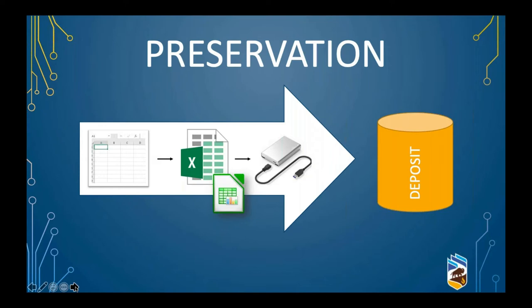If you do use less commonly used software but it's still functional over your research, you should still consider converting to something more commonly used at the end of your project, particularly if you intend to make that data accessible to others. Other potential users will need to download and open your data to interpret it, and they won't be able to do this if you're using software that's very expensive to install or inaccessible. Where possible, opt for open source or commonly used, stable tools.